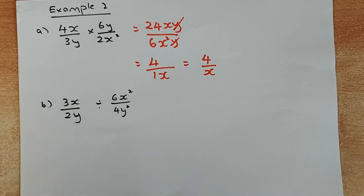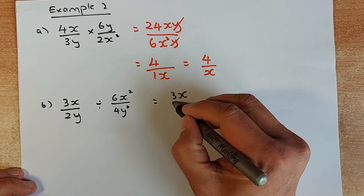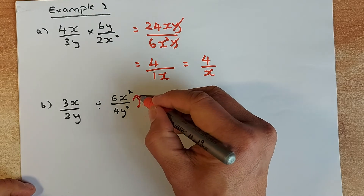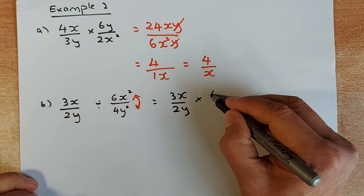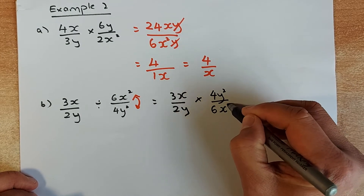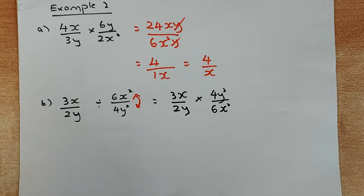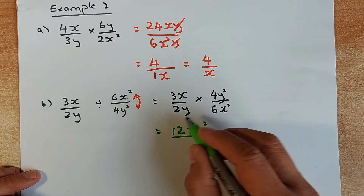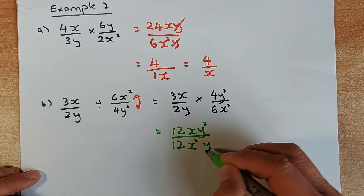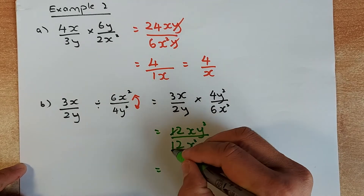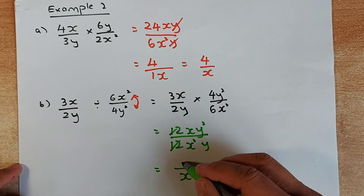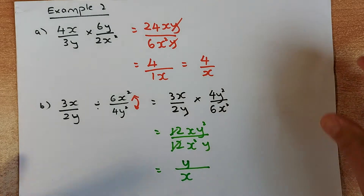Now we do the division example. When you have a division, the first thing you do is flip the second fraction and multiply. So 3x over 2y divided by 6x squared over 4y squared becomes 3x over 2y multiplied by 4y squared over 6x squared. Multiply numerators: 3 times 4 gives 12xy squared. Multiply denominators: 2 times 6 gives 12x squared y. Simplify: 12 over 12 is 1, x over x squared leaves 1x at the bottom, and y squared over y is y. That is how you simplify an algebraic fraction with division.